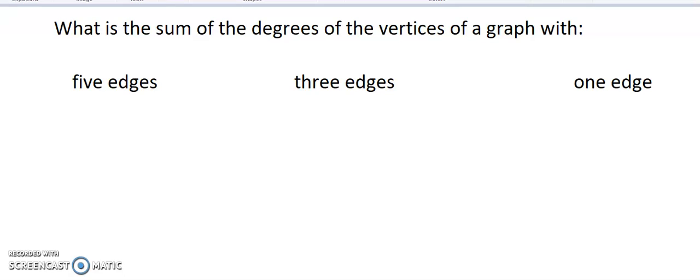Now, this question goes a bit deeper into really understanding everything. It says, what is the sum of the degrees of the vertices of a graph with 5 edges? So if I've got 5 edges, that means I've got 5 bridges.